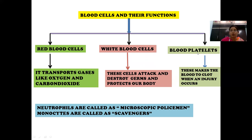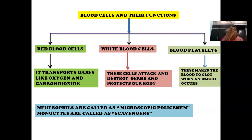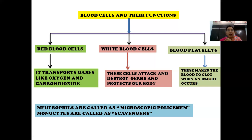Blood platelets are also very important. When we are injured, blood comes out. But after one to three minutes, the blood automatically stops. What happens is that all the platelets come to the wounded area and form a mesh-like structure, which does not allow blood to go out, and the blood gets clotted. So blood platelets are very important — they make blood clot when an injury occurs. Red blood cells help in transport of gases; white blood cells protect our body from germs.